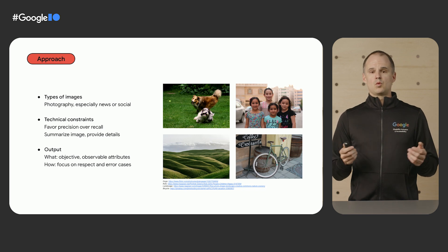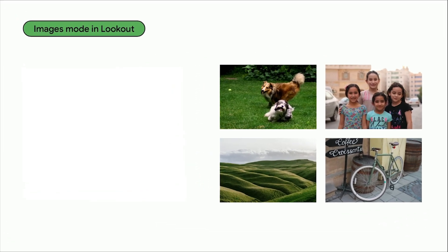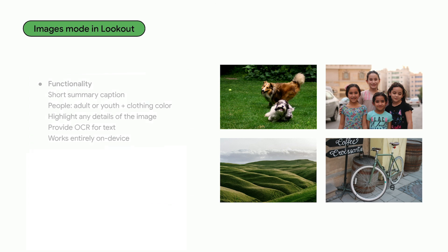That's how we approached the problem. Lookout's new images mode can: offer a caption for an image, such as 'dogs playing in the grass'; if people are present, describe each person's upper body clothing and whether they're an adult or youth, for example 'youth, black shirt'; label details in the image such as hills and clouds; and read any text present, such as 'coffee, croissants.' All of this works on device with no network connection needed.